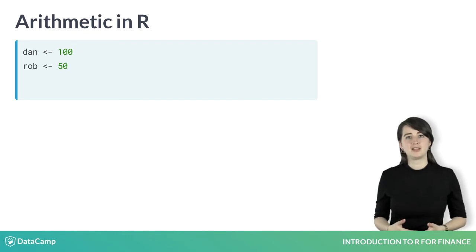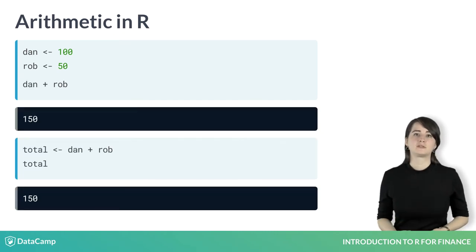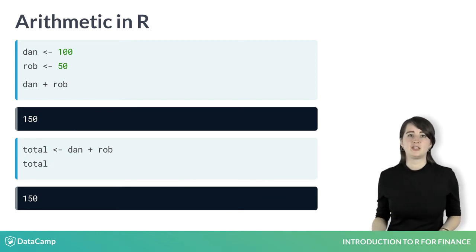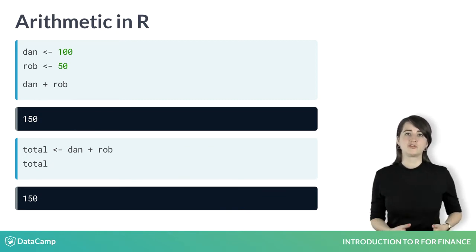Suppose you want to calculate the total amount your two friends owe you. Luckily for you, in R you can perform calculations with variables. To calculate the total, just type Dan plus Rob. You could even assign this value to a new variable, total, to use later.